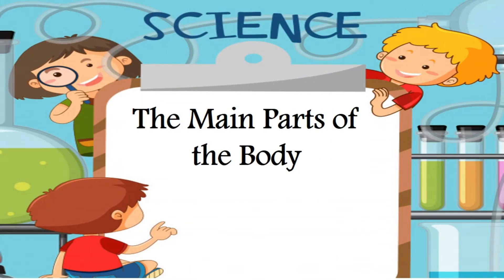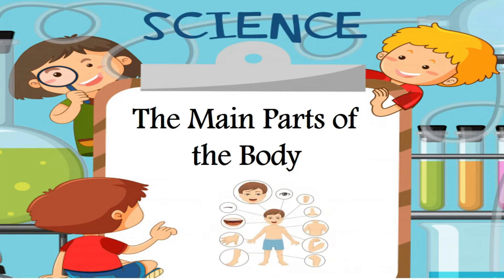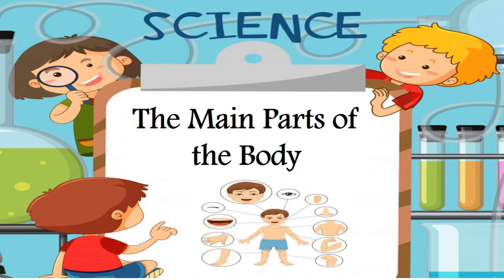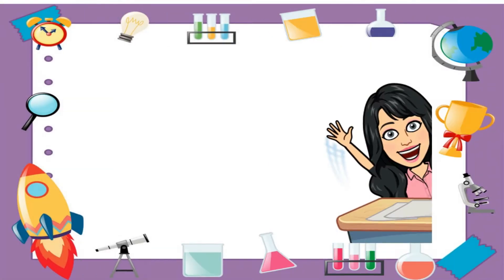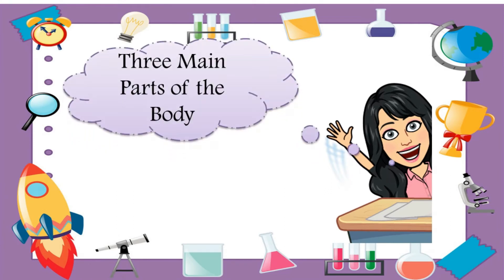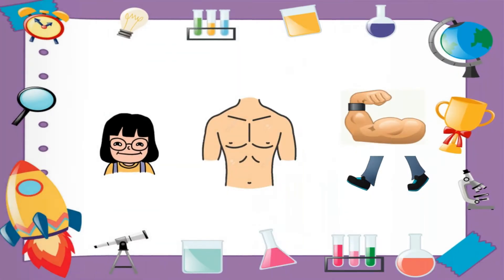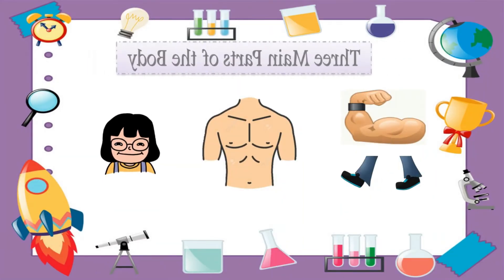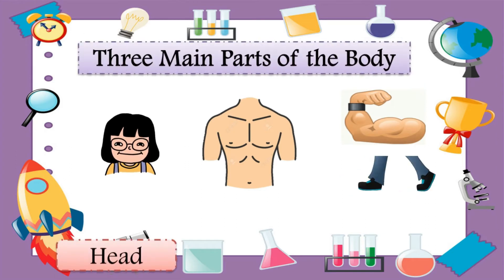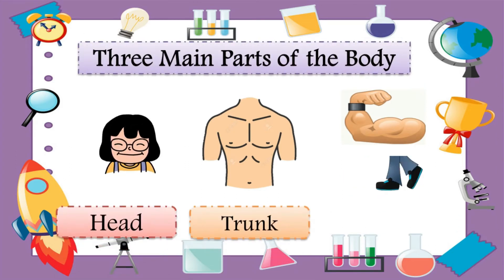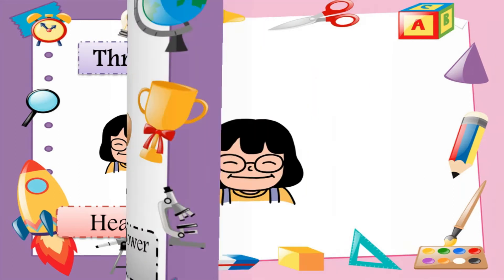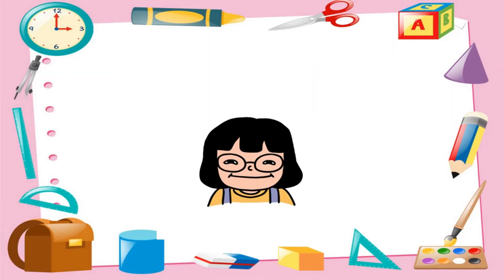Hi kids, this is teacher Eloisa. Today we are going to talk about the main parts of the body. Come, let's learn and have fun together. There are three main parts of the body: the head, trunk, and limbs. The first main part of the body is the head.